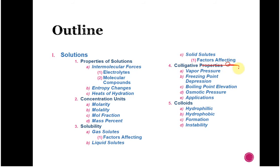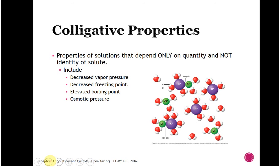In terms of where we are in the unit, we're going to be focusing here. We've got vapor pressure, freezing point depression, boiling point elevation, and osmotic pressure. Then we're going to talk a little bit about applications, because I always think it's nice to know why we care. Colligative properties are the properties of solutions that depend only on how many particles are dissolved, and not on what it is.